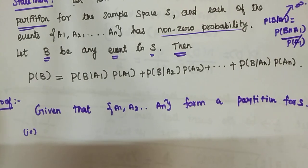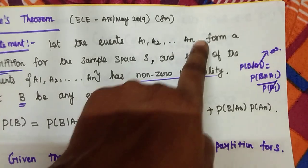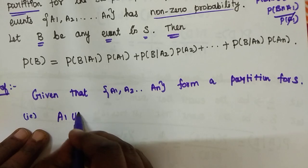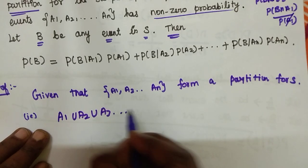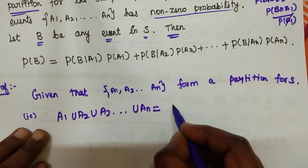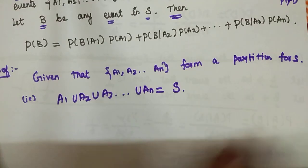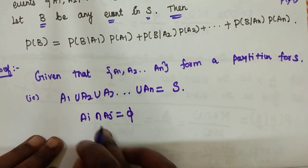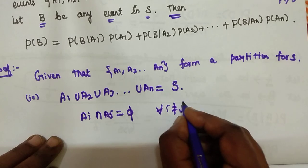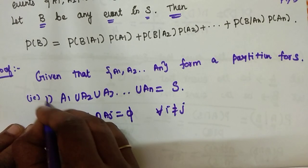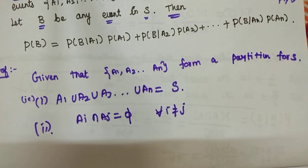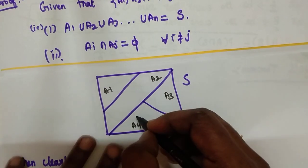We will start with A1, A2, AN forming a partition for the set S. We will use A1, A2, A3 and so on — this is the union. Now see the diagram. Look at this diagram.